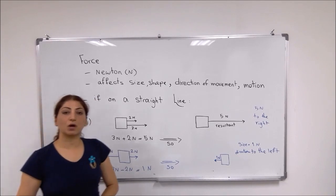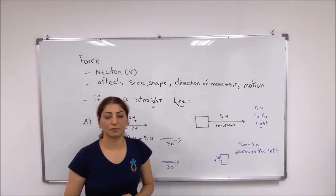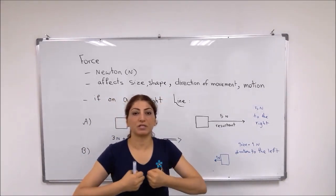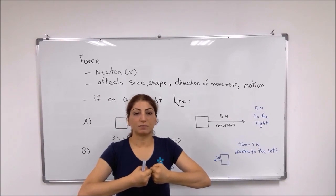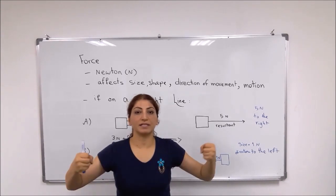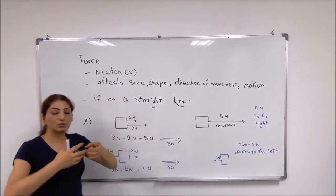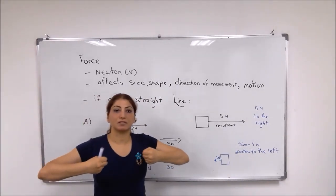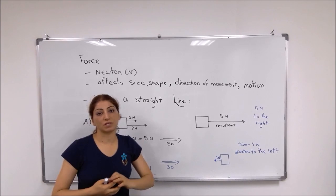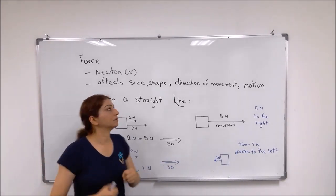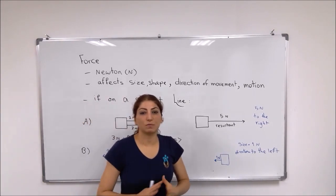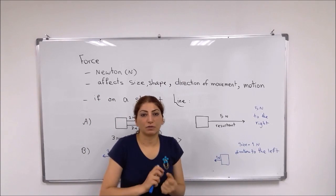What are the effects of force on objects? They can change the size of objects. For example, if you have a rubber band and you stretch it, you are applying force in opposite directions. The rubber band will stretch — it gets longer, the length increases. Two opposite forces from two different directions cause the object to change its size. The force can also affect the shape of objects — they can get smaller, larger, or deformed.